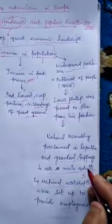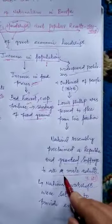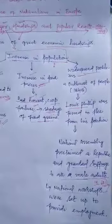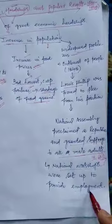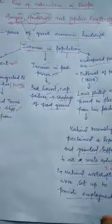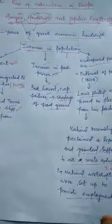The right to vote was extended to all male adults. The National Assembly also worked on establishing national workshops to provide employment to the unemployed. I hope you understood this topic well. If you have any doubts or problems, you can ask me. Thank you.